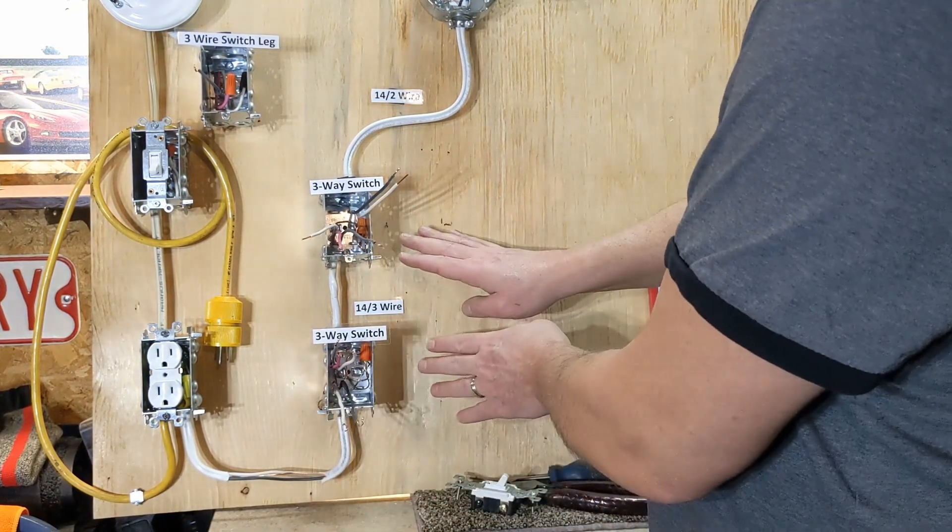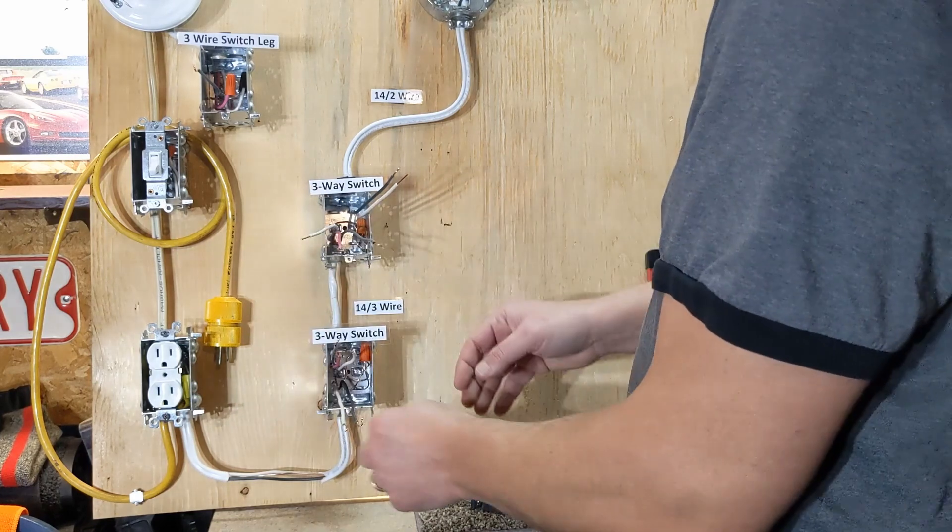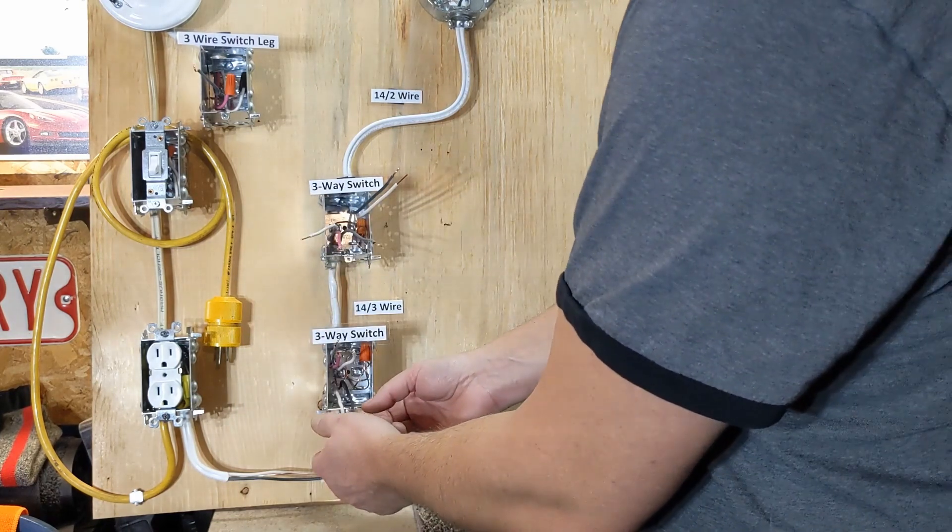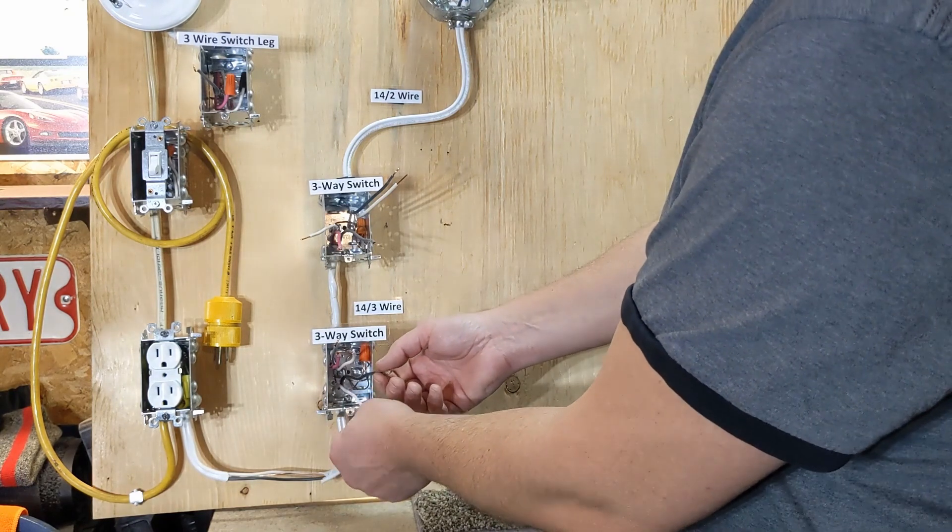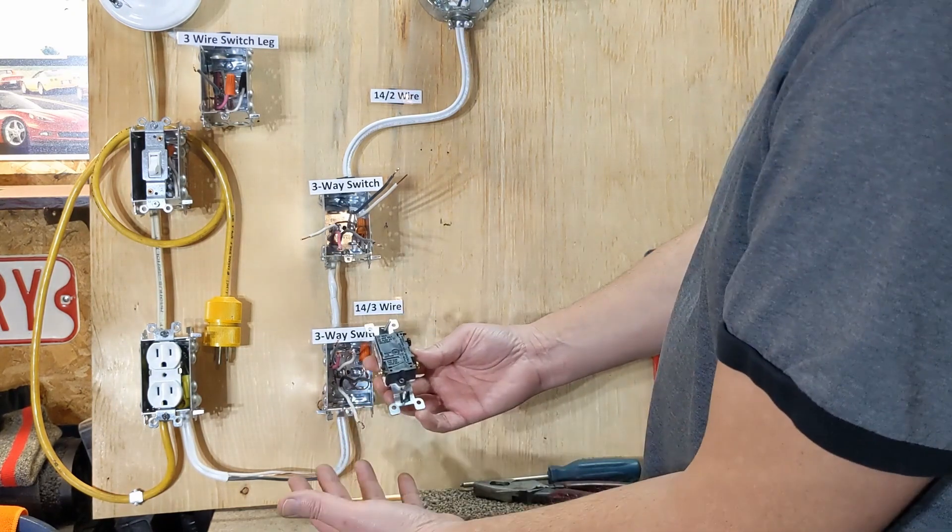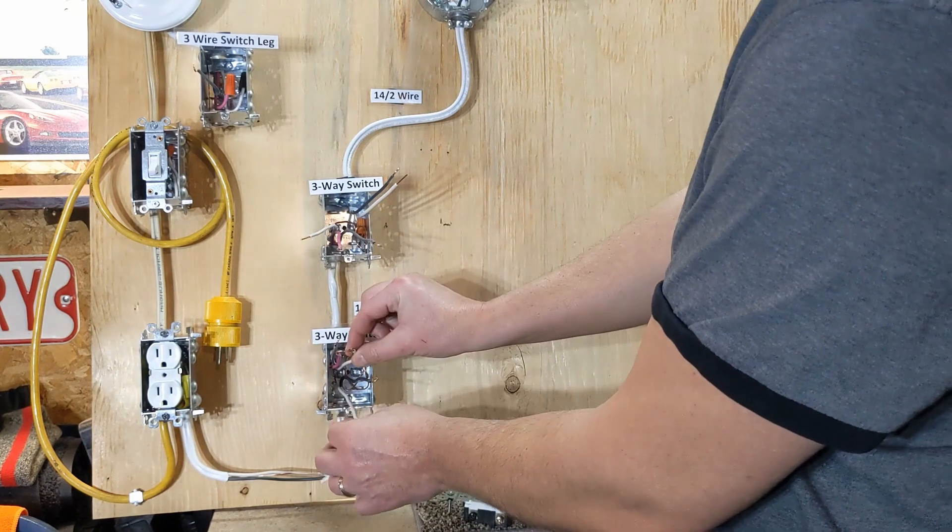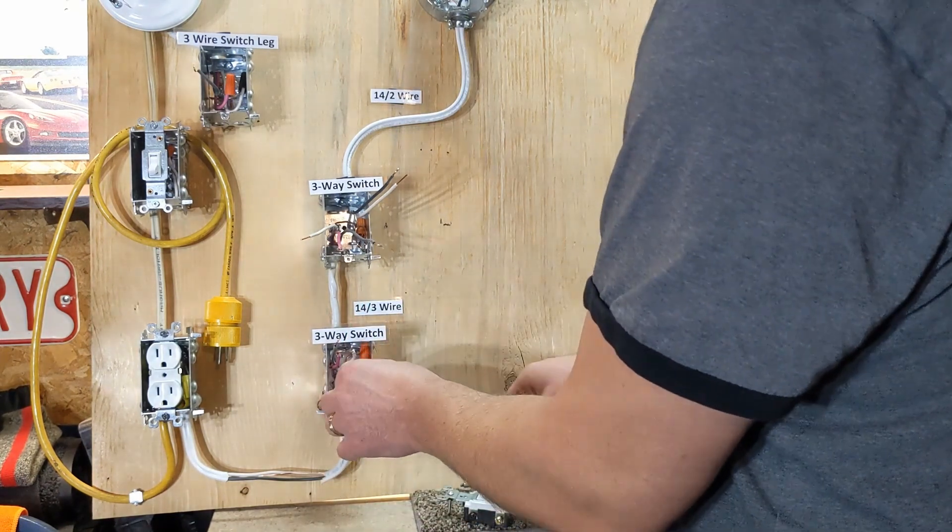So now we're just left with our neutrals, our hots, our travelers, all that good stuff. We want to take our neutrals next. The switch, you don't need a neutral, so we need to just carry it through. So we're just going to marat them together.